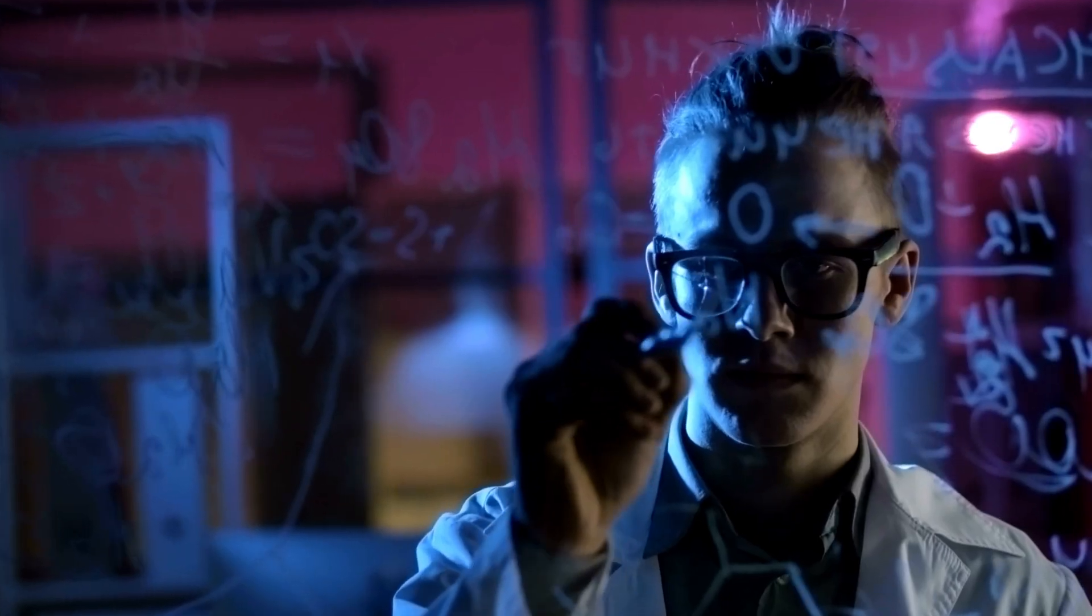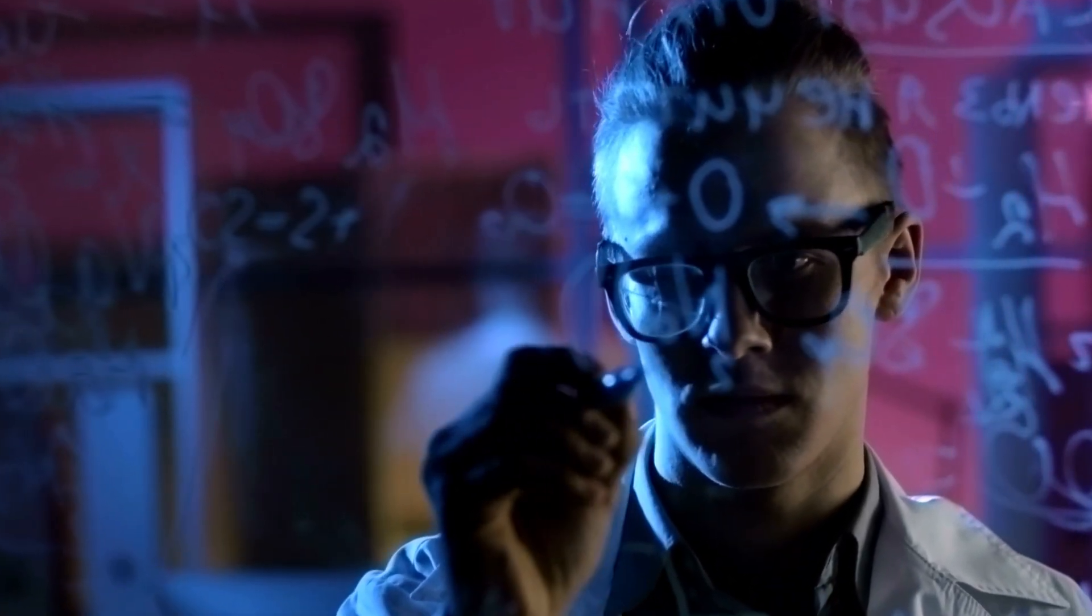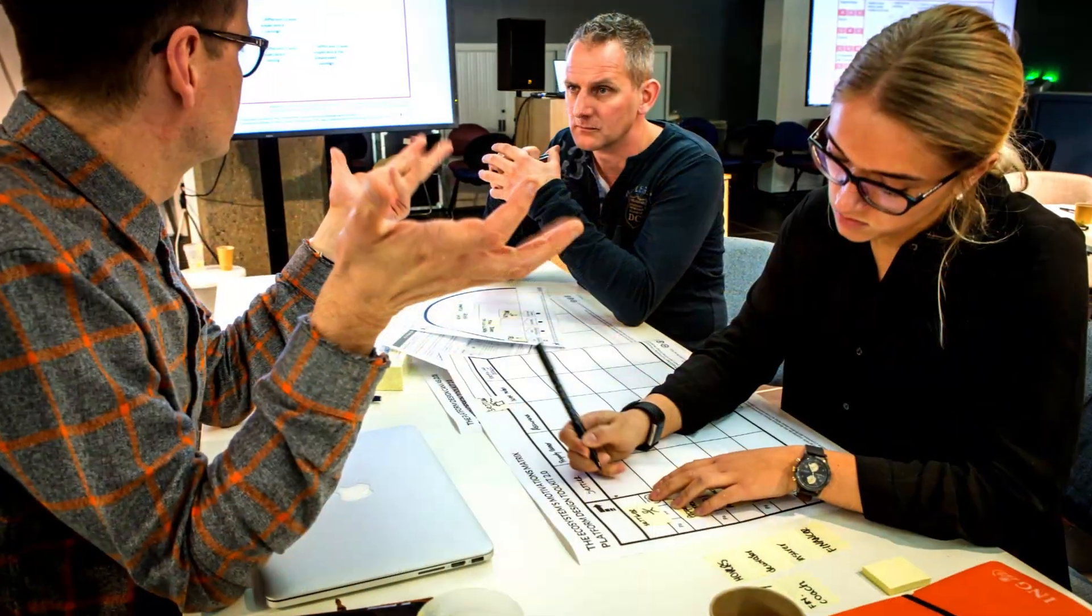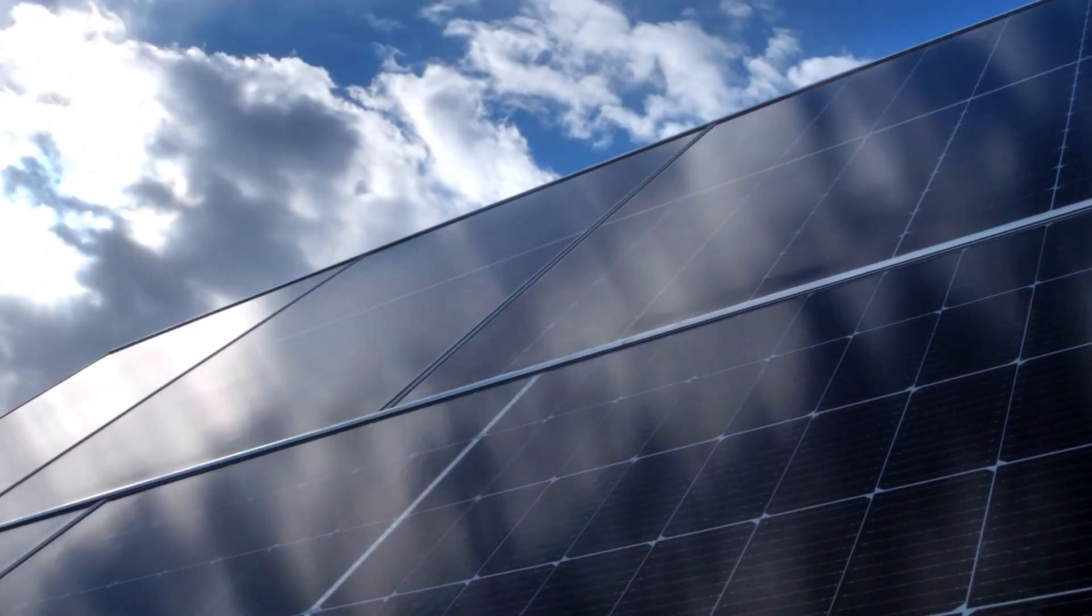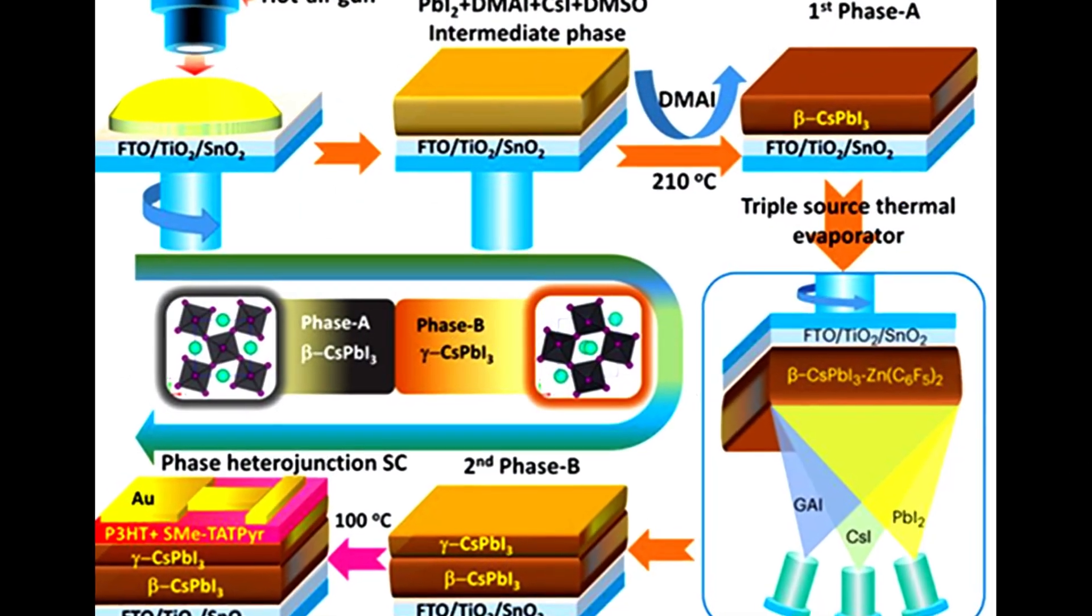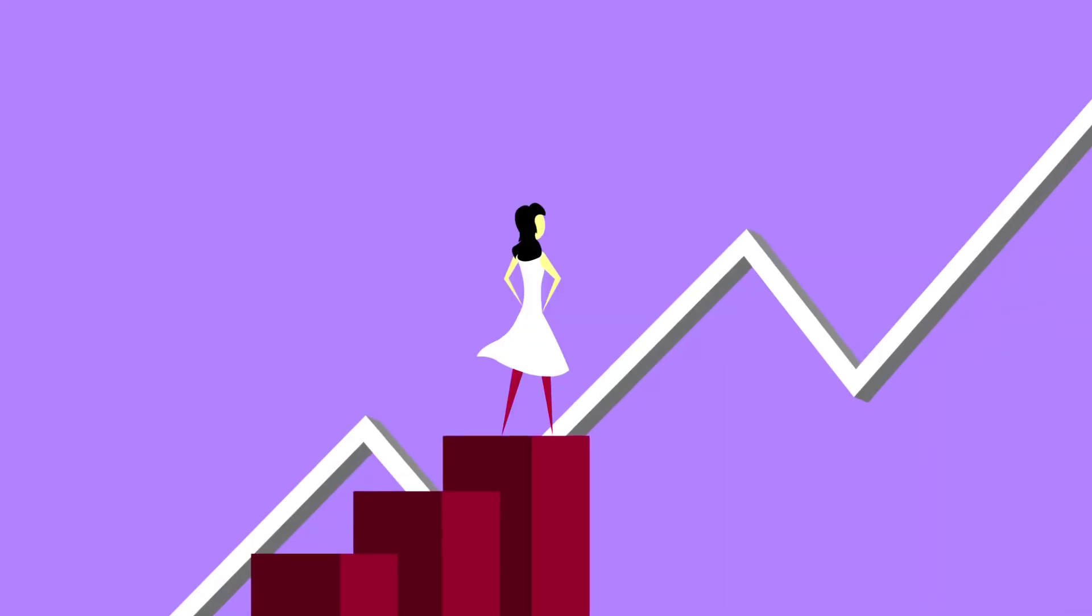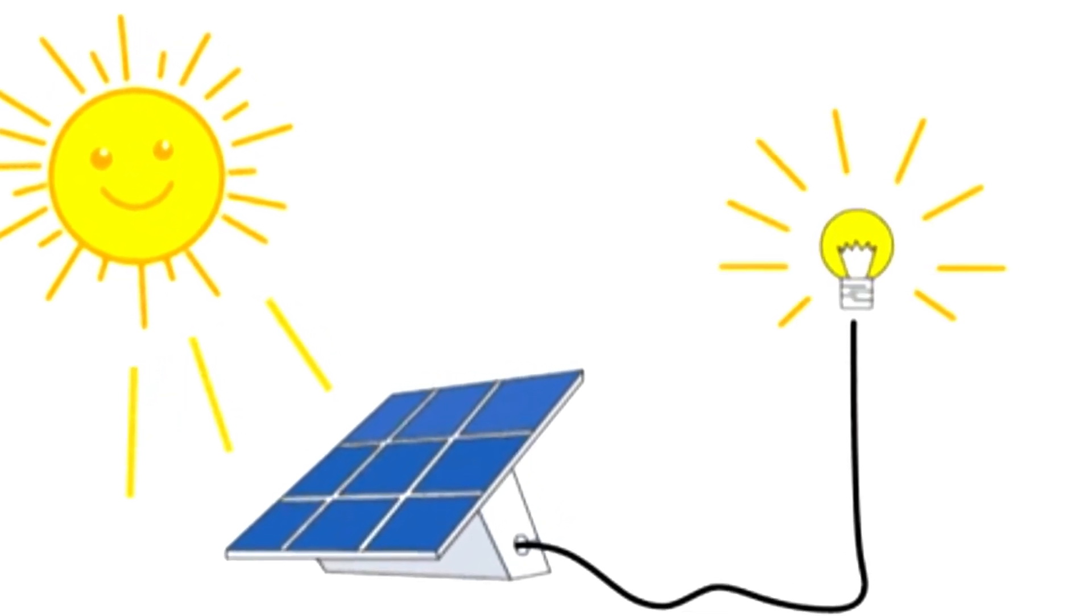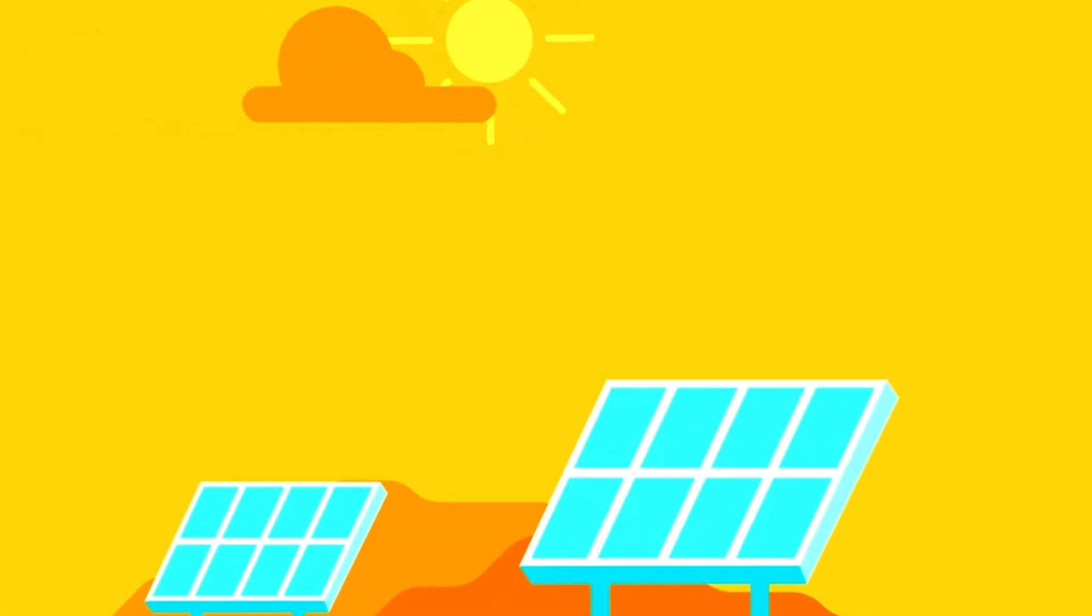Next up, researchers have introduced a groundbreaking method for creating stable and efficient next-generation solar cells. This development addresses crucial aspects of solar cell technology, enhancing both stability and performance. By pushing the boundaries of solar energy conversion, this innovation holds great promise for advancing the adoption of solar power. It underlines the ongoing efforts in the field of renewable energy to make solar technology more accessible and reliable for the future.